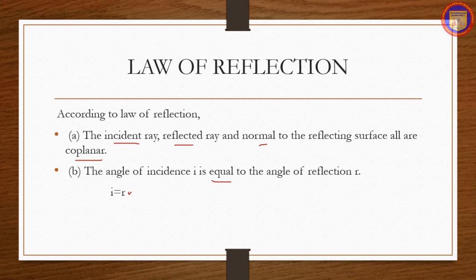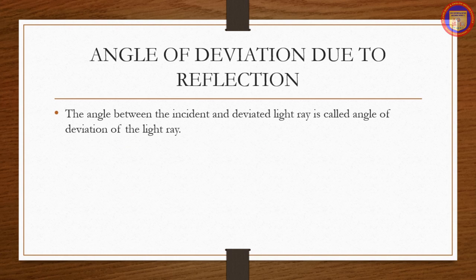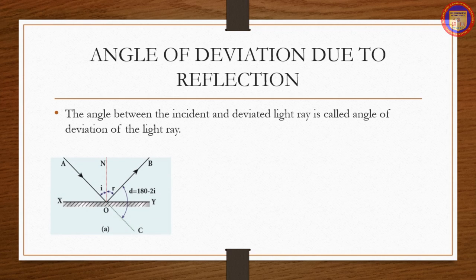Angle of deviation due to reflection: the angle between the incident and the deviated light rays is called the angle of deviation of the light ray. The diagram shows the incident light as AO, the reflected light as OB, and the undeviated light as OC, which is the continuation of the incident light. The angle between OB and OC is the angle of deviation d.